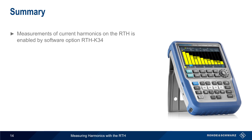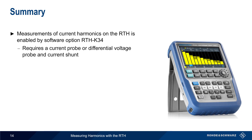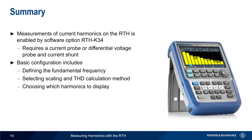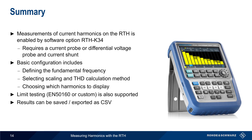Let's end with a brief summary. Measurement of current harmonics on Rohde & Schwarz RTH Series oscilloscopes is enabled by software option RTH-K34. In addition, either a current probe or a differential voltage probe and current shunt are needed to measure the current. Basic configuration includes defining the fundamental frequency of the signal, choosing the scaling type and method used to calculate total harmonic distortion, and selecting which harmonics should be displayed. Testing harmonics against limits — either EN5160 or custom limits — is also supported. Finally, measurement results can be saved and/or exported as standard comma-separated value files. This concludes our presentation. If you would like to learn more about different types of power measurements or Rohde & Schwarz solutions for power measurements, please see the links in the video description. Thanks for watching.